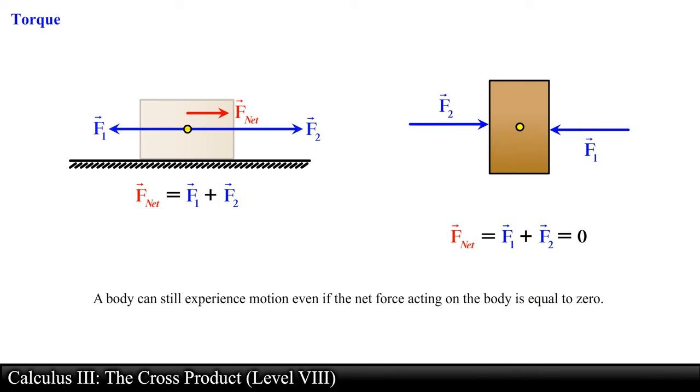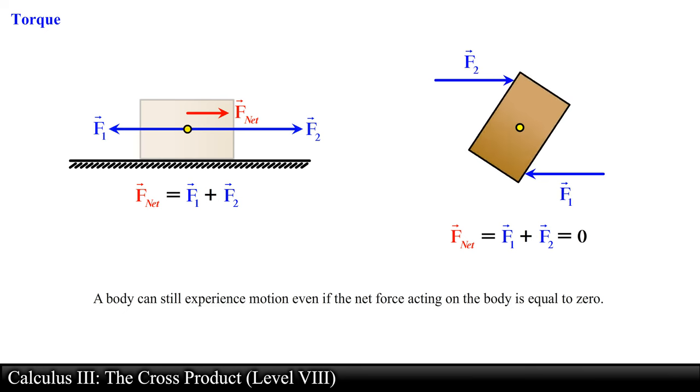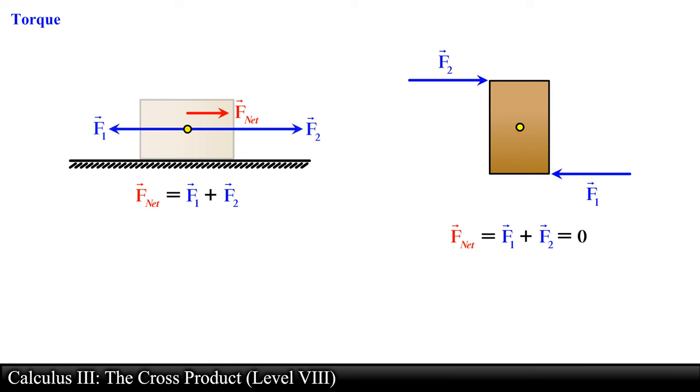On the other hand, if we shift these same forces so that they point away from the center of the box, this will cause the box to move. Specifically, it will cause the box to rotate even though the forces were equal in magnitude but opposite in direction. The application of these forces causes the box to rotate. This means that a body can have rotational as well as translational motion.